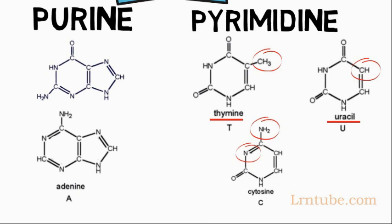Remember thymine and uracil are very similar, and while both of them have oxygen, cytosine has an amine.